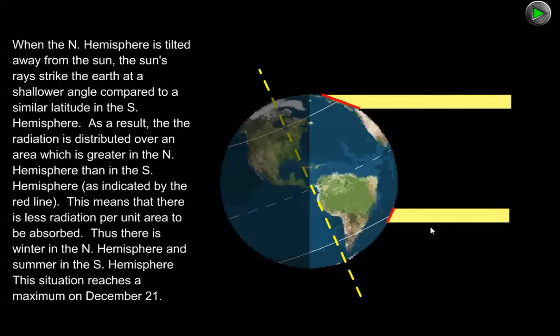Meanwhile, the southern hemisphere is pointed more directly at the sun, so the sun is coming in more directly and the heating power of the sun is stronger in the southern hemisphere. That's why when it's winter in the northern hemisphere, it's summer and warmer in the southern hemisphere.